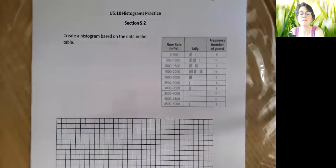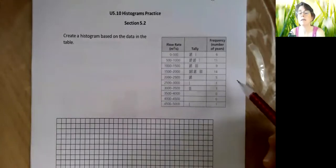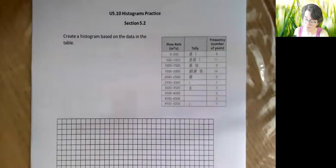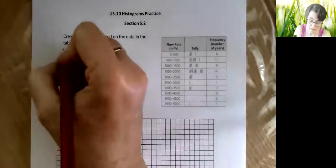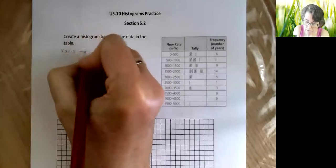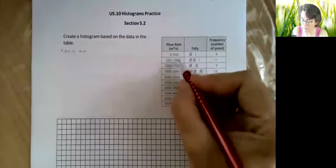Hi there, this is video 510 on histograms. This is the second one where I give you a lovely frequency table and we are going to create a histogram based on that. So first thing we're going to do is let's figure out our x-axis, my horizontal one, and that's where my intervals are going to go.